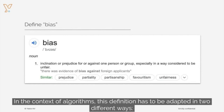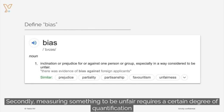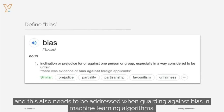In the context of algorithms, this definition has to be adapted in two different ways. First of all, bias in algorithms is not a conscious thing — it's actually driven mostly by the data itself. Secondly, measuring something to be unfair requires a certain degree of quantification, and this also needs to be addressed when guarding against bias in machine learning algorithms.